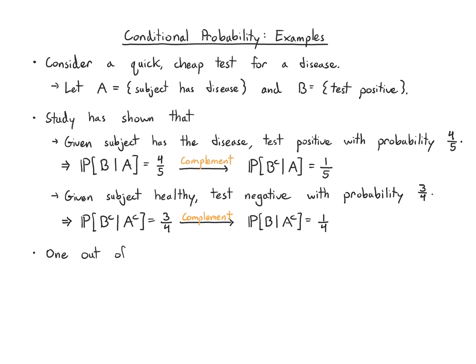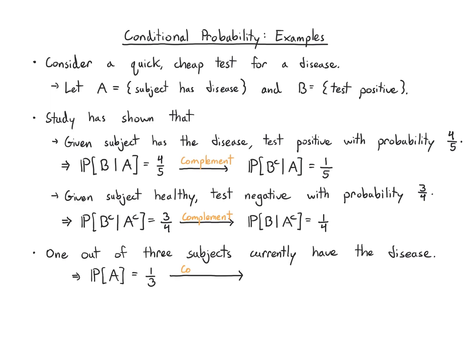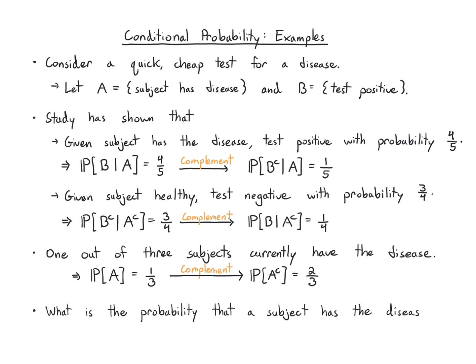Let's say we also know that the disease is prevalent in one out of three subjects at the moment. So we can say with some confidence, the probability of A is one-third. By the complement property, two-thirds of subjects do not have the disease, so the probability of A complement is two-thirds. What we're ultimately interested in knowing is: what is the probability that the subject has the disease given that the test is positive?